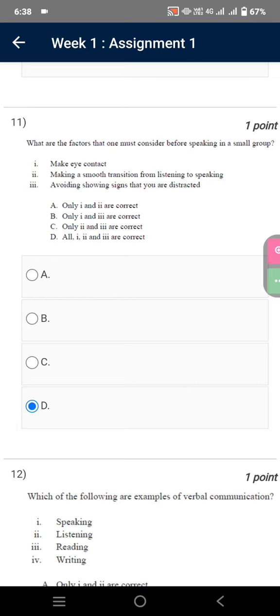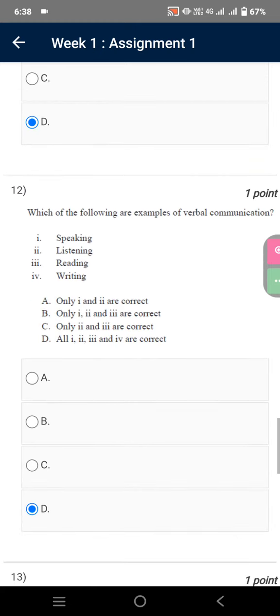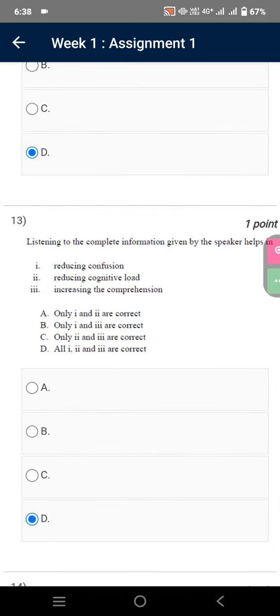What are the factors that one must consider before speaking in a small group? Option D is correct. Which of the following are examples of verbal communication? Option D is correct.